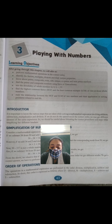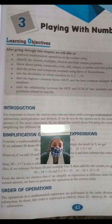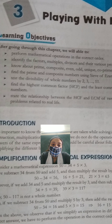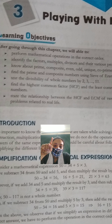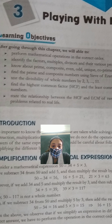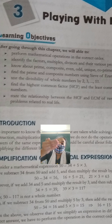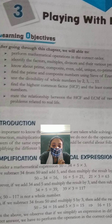First of all, here it is given: learning objectives. After going through this chapter, we will be able to — मतलब जब ये chapter हम लोग करेंगे, तब हमें कौन-कौन सी चीज़ें करनी होगी? First is, perform mathematical operations in the correct order. Mathematical operations कौन-कौन से होते हैं? That is, addition, subtraction, multiplication and division — ये चार basic हैं. उसको correct order में कैसे करना है, that we will study.